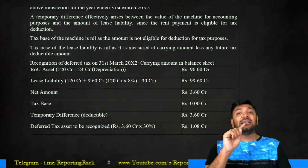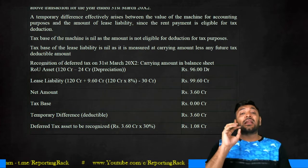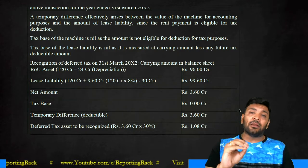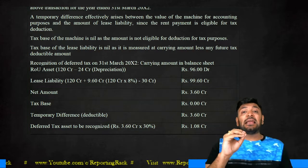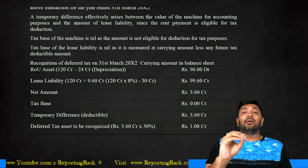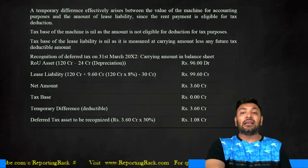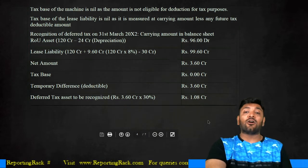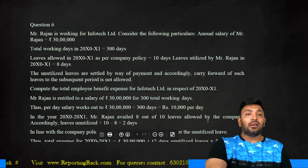At 30%, the deferred tax amount is 1.08 crores. The question is whether this is a deferred tax asset or a deferred tax liability. In the case of a liability, whenever the carrying value is greater than the tax base, it results in a deferred tax asset. Therefore, the deductible temporary difference of 3.6 crores results in a deferred tax asset of 1.08 crores.